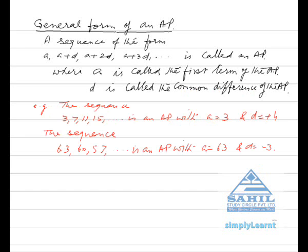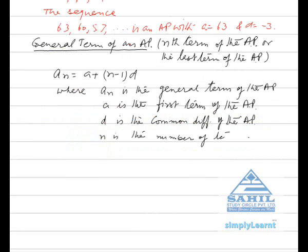The sequence 63, 60, 57, etc. is an AP with first term 63 and common difference minus 3. The general term, also called the last term or Nth term of an AP, is given by: l = A + (N−1) × D, where N is the number of terms, A is the first term, and D is the common difference.